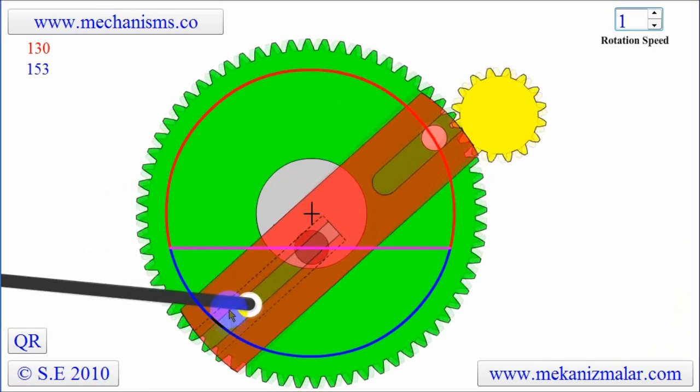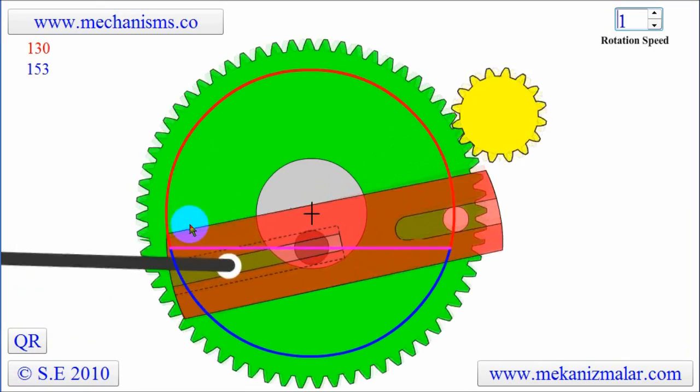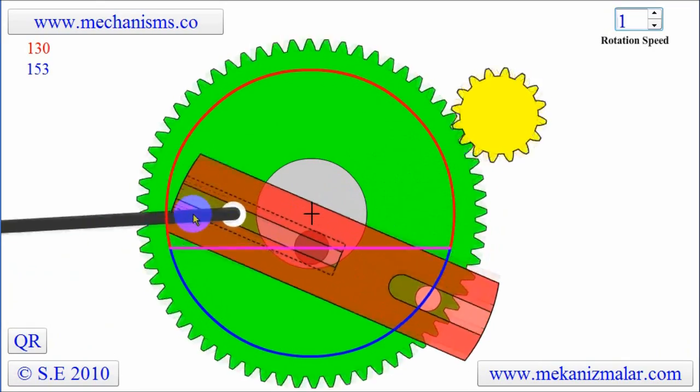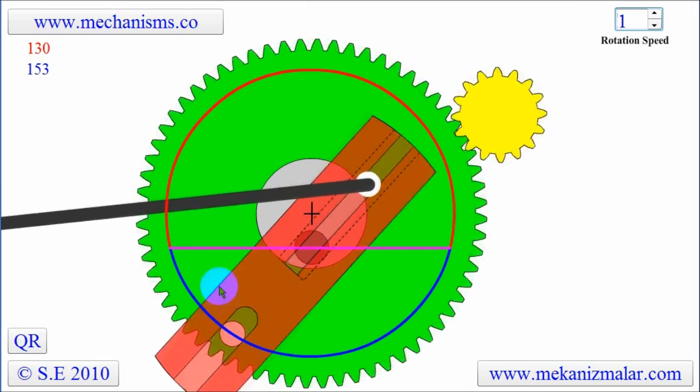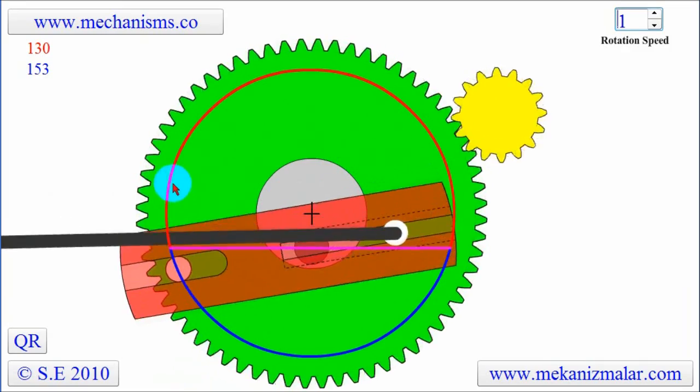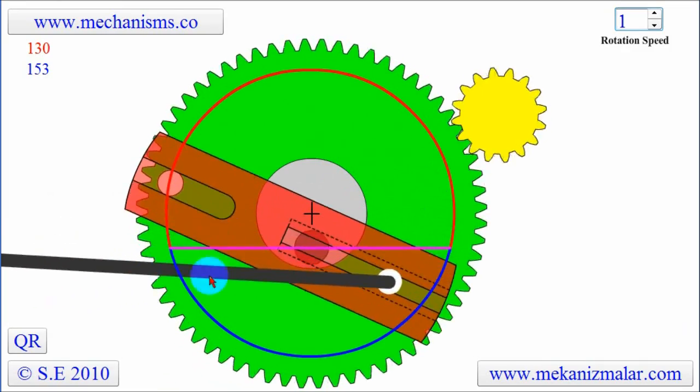Since the red segment is longer than the blue segment and the white pin attached to the green bull gear rotates with a constant rotational motion, this means that the white pin spends more time to move on the red segment than the blue segment.